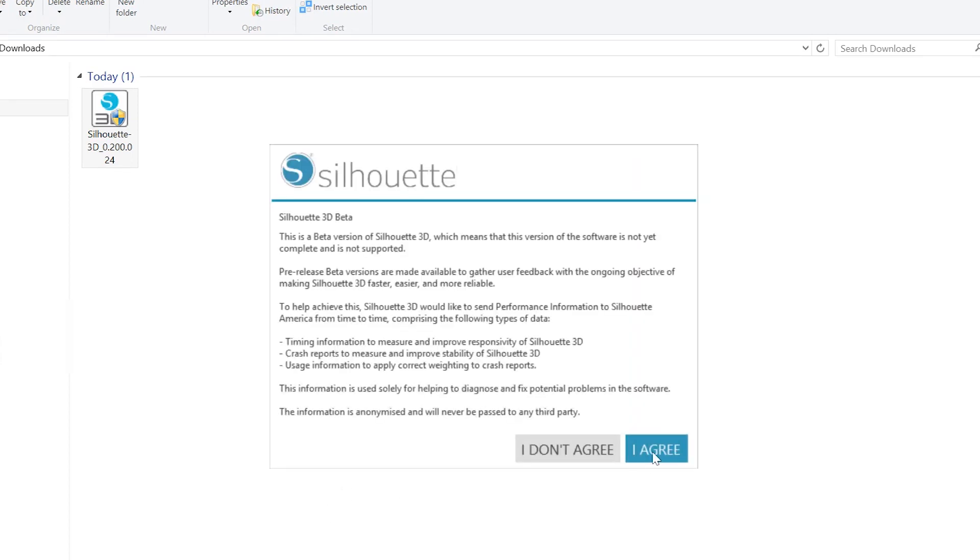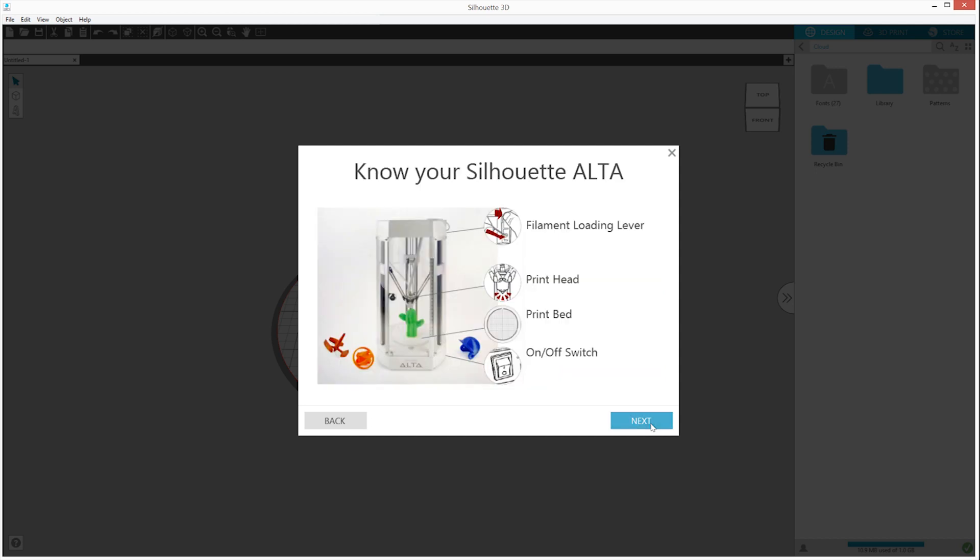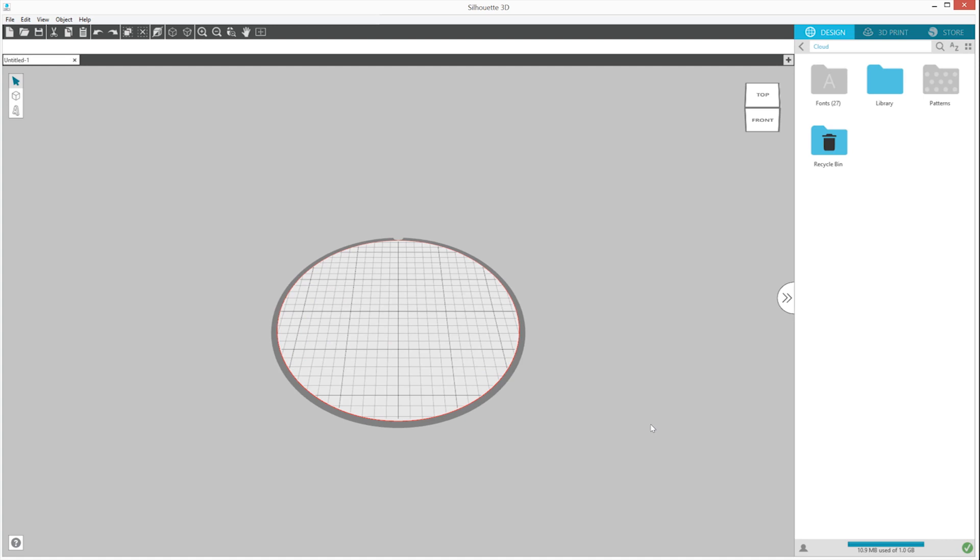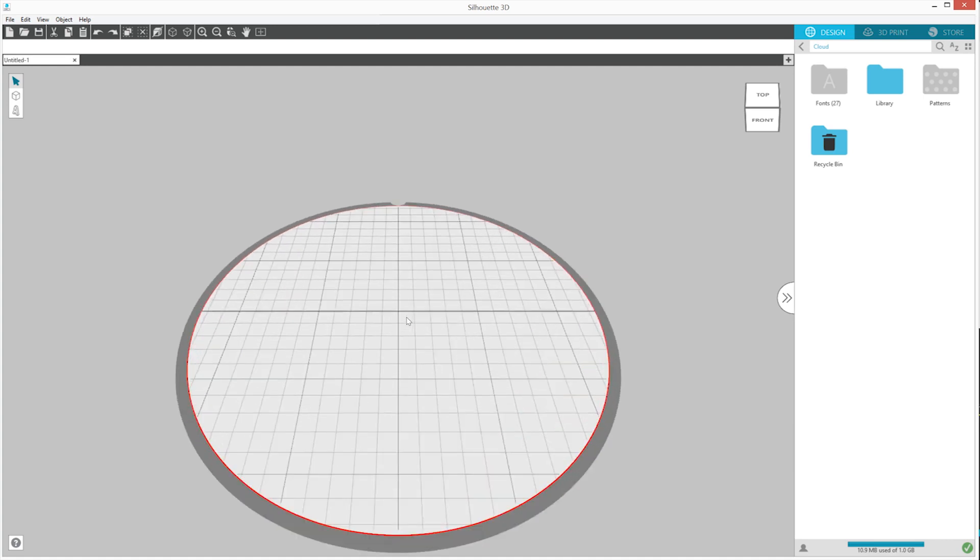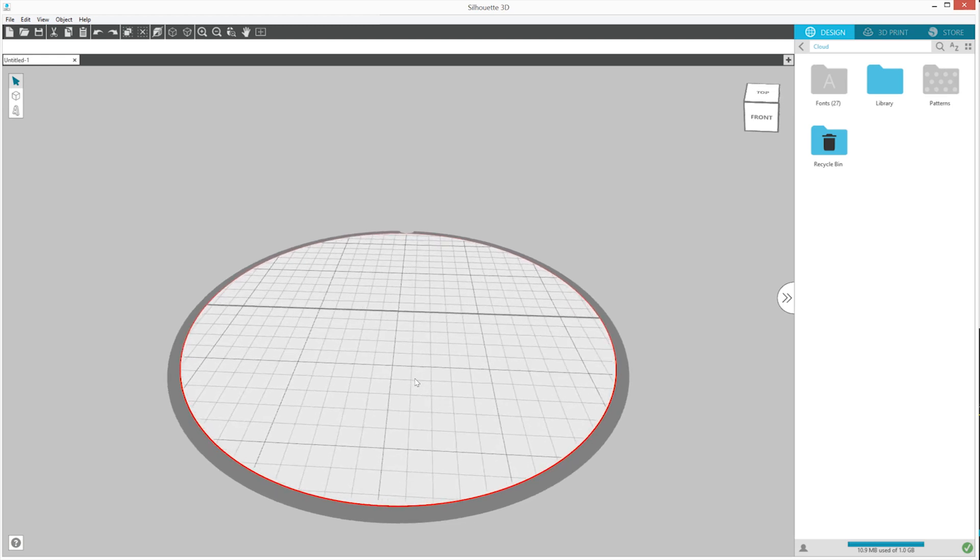The first thing you'll see when Silhouette 3D opens is a slideshow that walks you through removing the packaging from the Alta and where important parts of your machine are located. When you've finished with the slideshow, you'll note that there is the main screen that displays a circular area with a grid. This represents the Alta platform's print area.